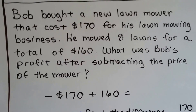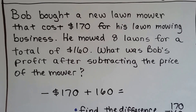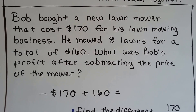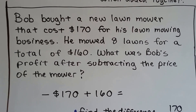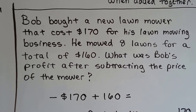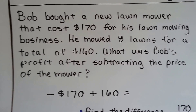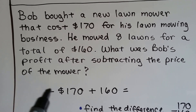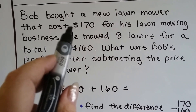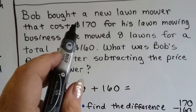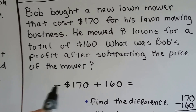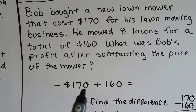Next problem: Bob bought a new lawnmower that cost $170 for his lawn mowing business. He mowed eight lawns for a total of $160. We need to find Bob's profit after subtracting the price of the mower, writing it as a positive and a negative added together. When he spent $170 on the lawnmower, he went minus $170 in his bank account.